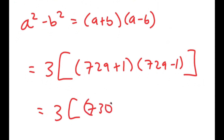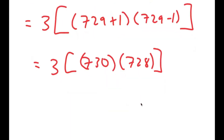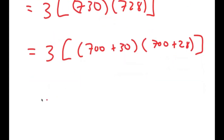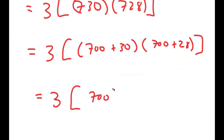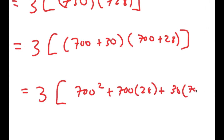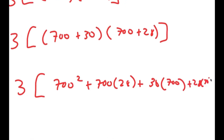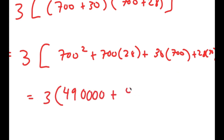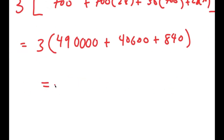This equals 3 times 730 times 728. Rewriting as 700 plus 30 times 700 plus 28, I expand to get 3 times 700 squared plus 700 times 28 plus 30 times 700 plus 28 times 30. This equals 3 times 490,000 plus 40,600 plus 840, giving 3 times 531,440, which equals 1,594,320. So this is my final answer.